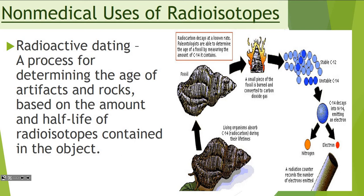It's a process of determining the age of artifacts and rocks based on the amount and half-life of radioisotopes contained in the object. We're going to set up a cloud chamber next time, and you'll actually be able to see alpha and beta particles coming off of lantern mantle — it's pretty cool.